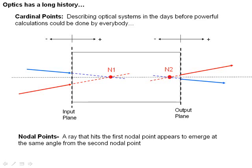The one that confuses me, that I find a little bit more difficult, is what's called the nodal points. Nodal point 1 is if rays come in to the optical system at some angle and hit nodal point 1,